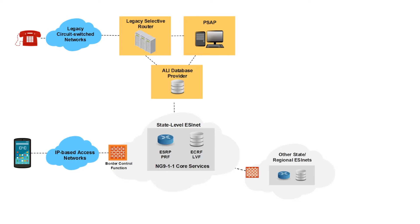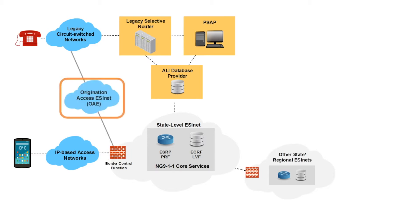The state-level ESINet, defined as a part of the CSEC NG911 Master Plan, includes the concept of an Origination Access ESINet, or OAE, to facilitate interconnectivity of state NG911 services. The Origination Access ESINet will provide first-hop connectivity to the state-level ESINet by aggregating all emergency call traffic currently delivered to each individual PSAP host site and converting it to a standards-compliant NG911 format that includes an embedded caller's location.